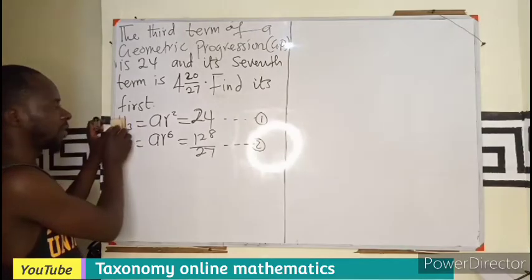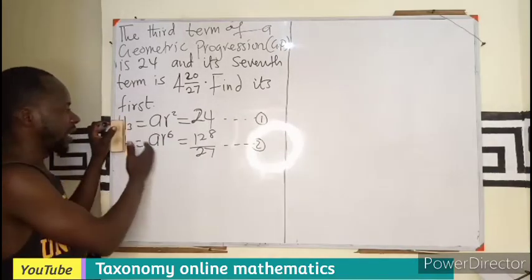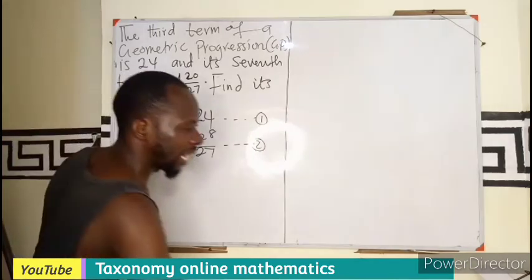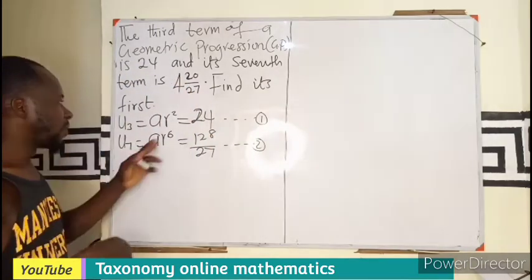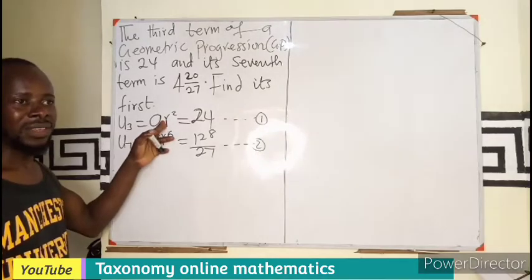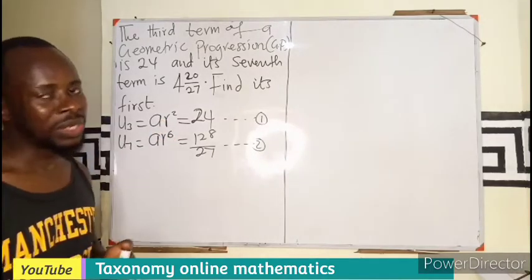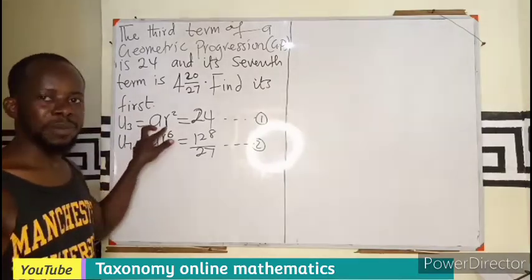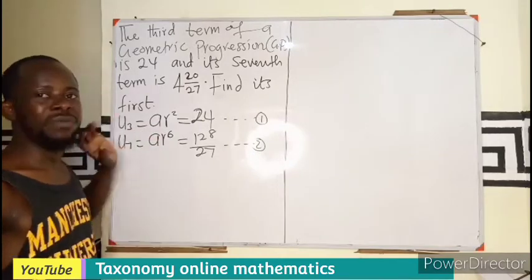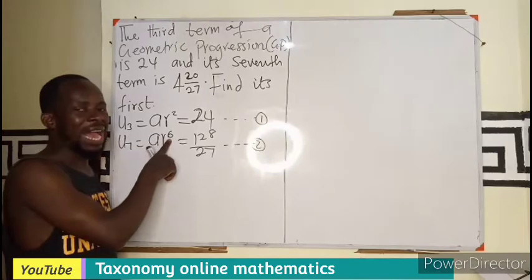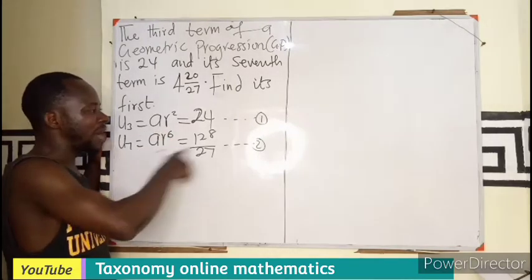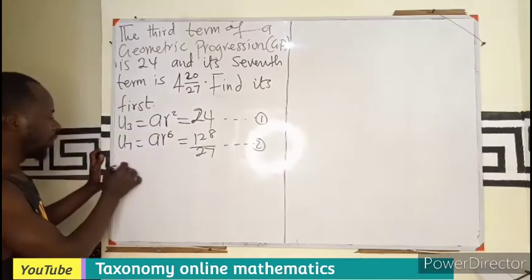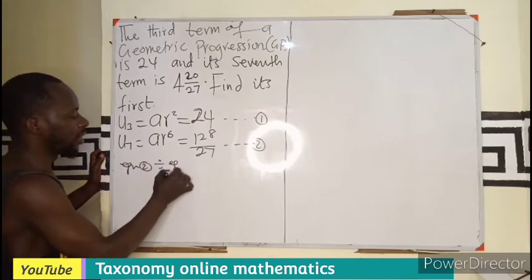Since there is no addition here, if I were to see plus or minus then I would think of how I can add the two equations or multiply by a particular factor. But this is having multiplication. To be able to cancel multiplication we use division. I will be looking at which one has the highest power and the smallest power. So I will divide both equations by the one with the smallest power. Meaning equation 2 divided by equation 1.